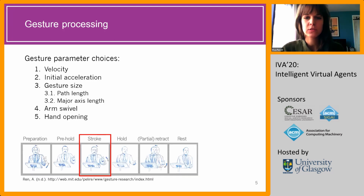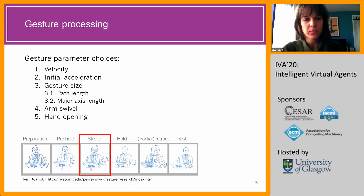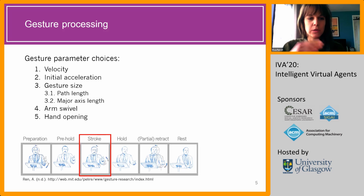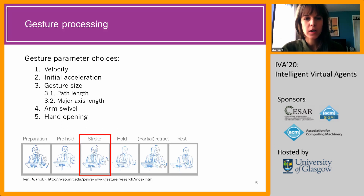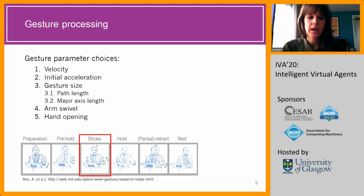Based on this previous work, we select a set of five easily extractable parameters to represent our gestures. First is gesture velocity. Then the size of the initial acceleration peak, which describes the velocity profile. Then gesture size, measured by two measures: the absolute path length produced by the wrist, and the major axis length, which is the length of the axis between the minimum and maximum point of the gesture. Then arm swivel, which describes the rotation around an axis between the shoulder and wrist, bringing the elbow in or away from the body. And finally hand opening — the extent to which the fingers are spread out.